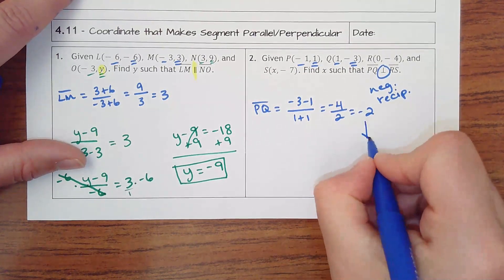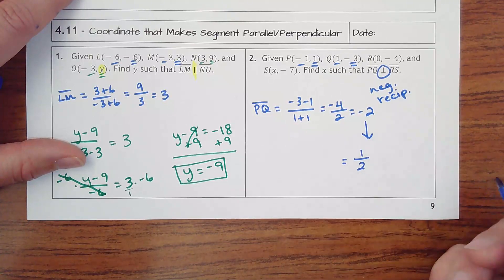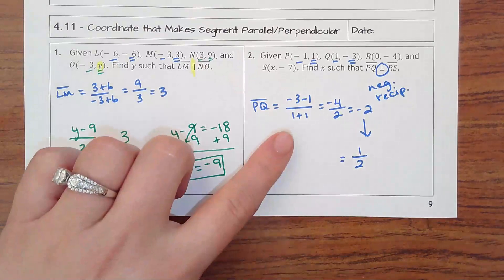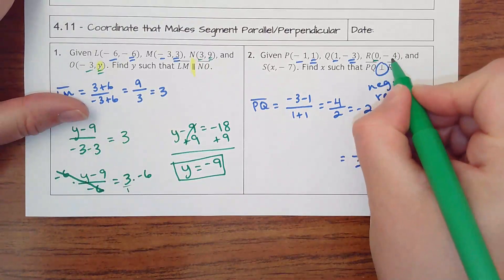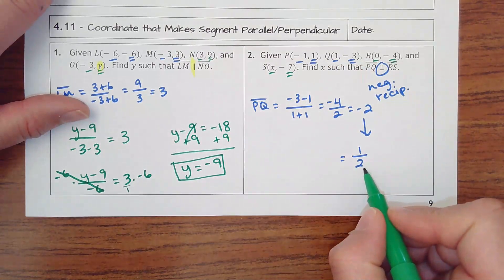So now the slope that I really want is going to be now positive 1 half. So I'm going to find the slope of RS and set it equal to what I want the slope to be, which is positive 1 half.